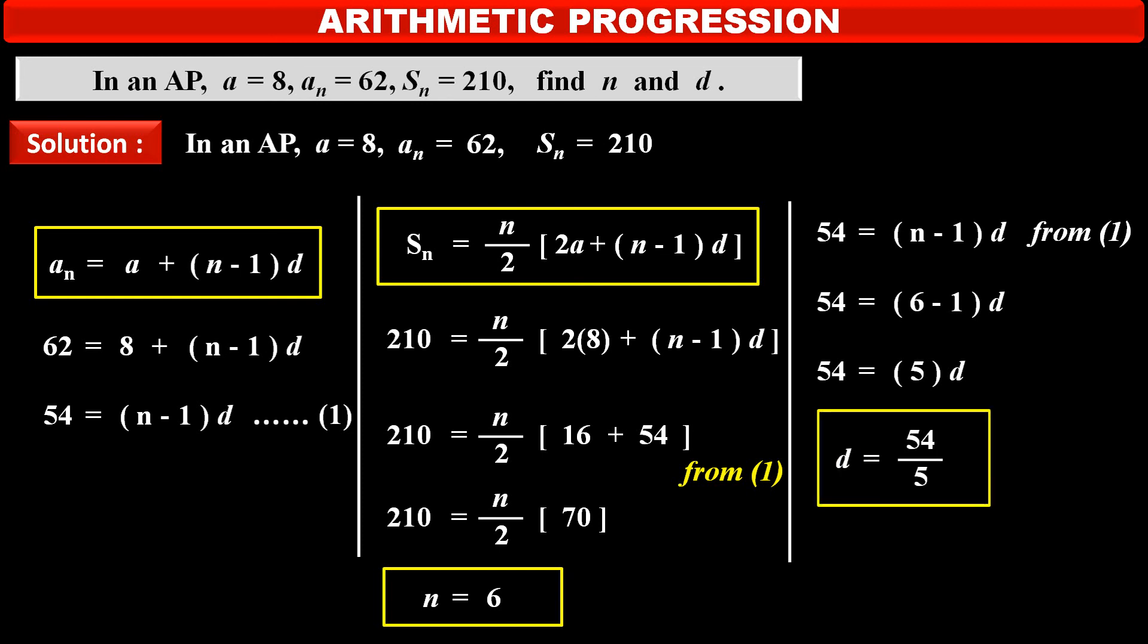Thus, we get both the required values n and d as 6 and 54 upon 5.